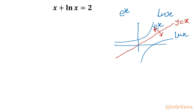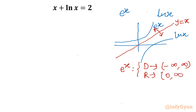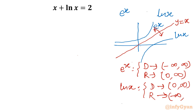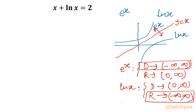One important conclusion comes out here. For e raised to the power x, the domain is minus infinity to infinity and the range is zero to infinity. For ln x, the domain is zero to infinity and the range is minus infinity to infinity. The domain of e^x is the range of ln x, and the range of e^x is the domain of ln x. So both functions are inversely connected — they are inverse functions.